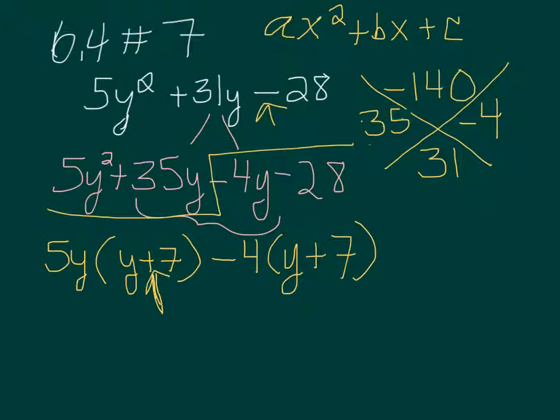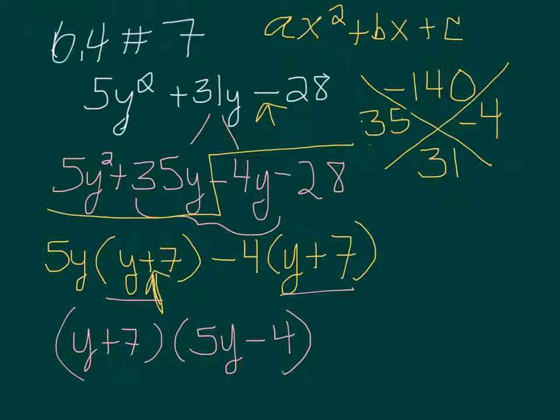Now, since these y plus 7s are the same, we can factor them out. And what I'm left with is 5y minus 4. And don't forget to check it by foiling to make sure that it is the right answer.